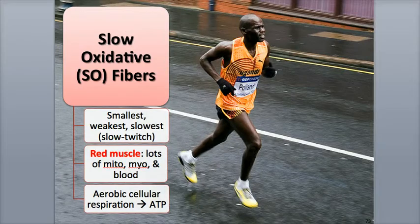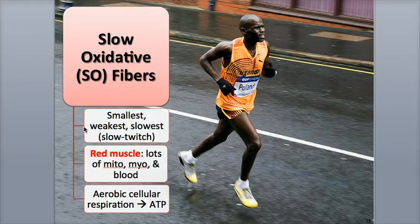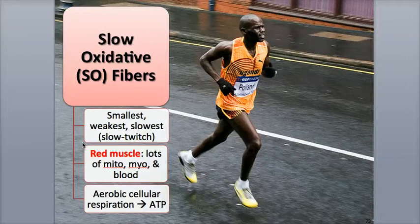Slow oxidative fibers are dark red in color due to their large concentrations of myoglobin, mitochondria, and blood capillaries. They are called oxidative fibers because they produce lots of ATP, primarily through the oxygen-dependent reactions of aerobic respiration. They generally have a smaller diameter than the other types of fibers and store low amounts of glycogen. They are classified as slow or slow twitch fibers because they have a relatively slow rate of ATP hydrolysis and an overall slower contraction cycle and speed of contraction, also called contraction velocity, that lasts from 100 to 200 milliseconds.